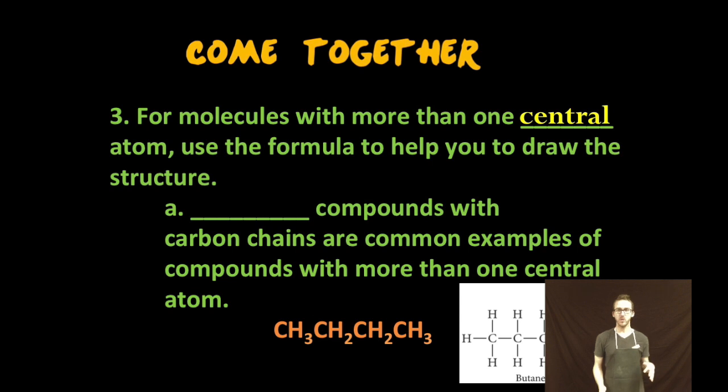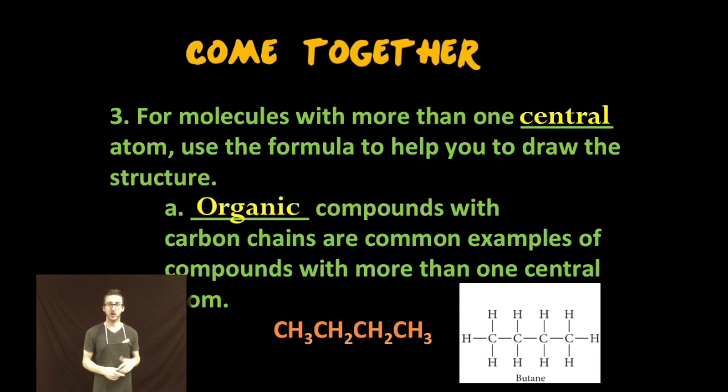And then lastly, for molecules with more than one central atom, use the formula to help you draw out the structure. Organic compounds with carbon chains are common examples of compounds with more than one central atom. And many times, you'll be given a formula that will sort of help you along the way to come up with the Lewis structure that's needed.